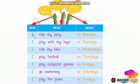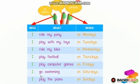So you have to write a sentence starting with I. Second W is what? Apa yang dia sedang buat? Ride my pony, play with my toys, ride my bike, play football, play computer games, go swimming, play the piano. These are the activities. And the third W is when: on Mondays, Tuesdays, Wednesdays, Thursdays, Fridays, Saturdays, or Sundays.